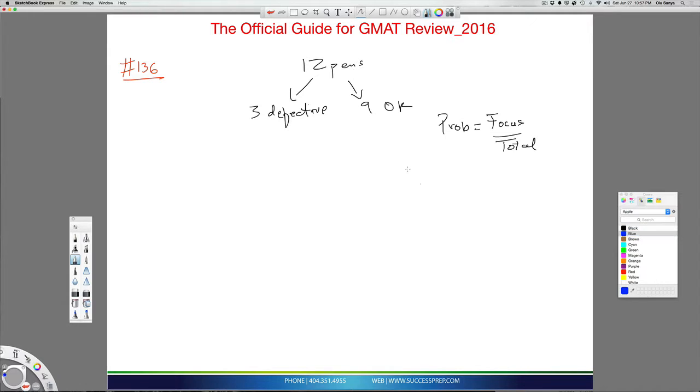So in this particular question, when it's asking for non-defective, it's going to be 9 because that's the number that's okay, that's not defective, over 12, which is the total. This will be for the first time we select.